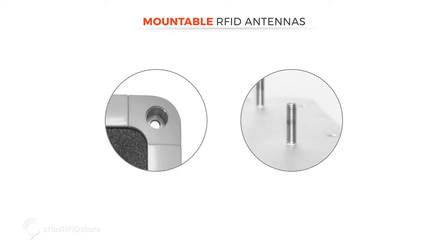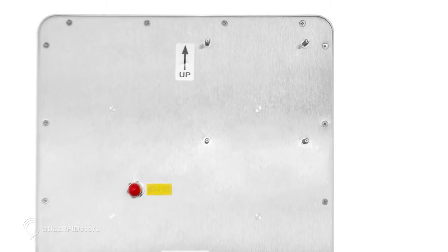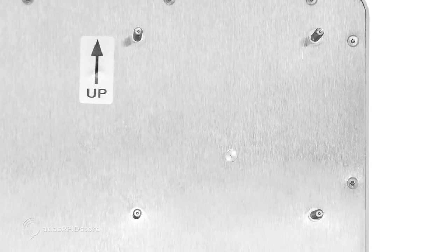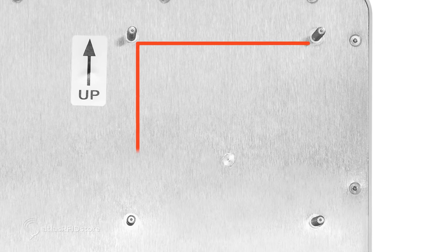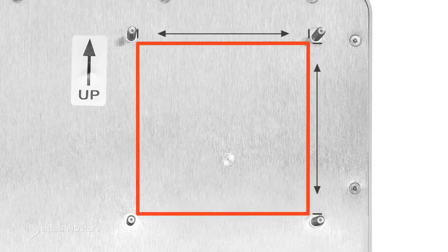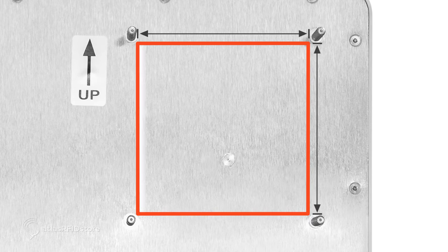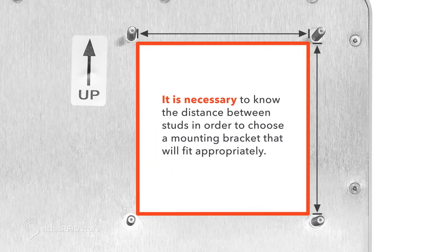On the back of mountable RFID antennas, there are either integrated mounting holes used for bolting RFID antennas directly to a wall or a set of threaded studs. Threaded studs are usually arranged in a square pattern, but vary in terms of dimensions between studs. It's necessary to know the distance between studs in order to choose a mounting bracket that will fit appropriately.